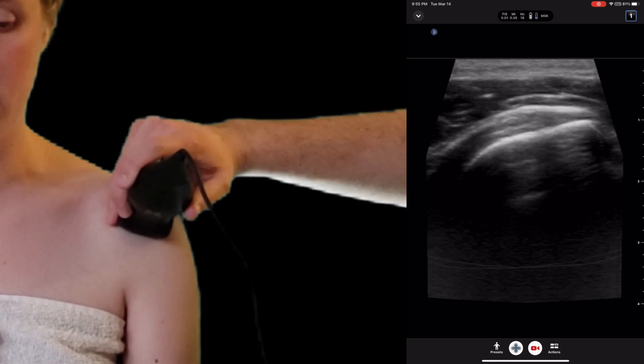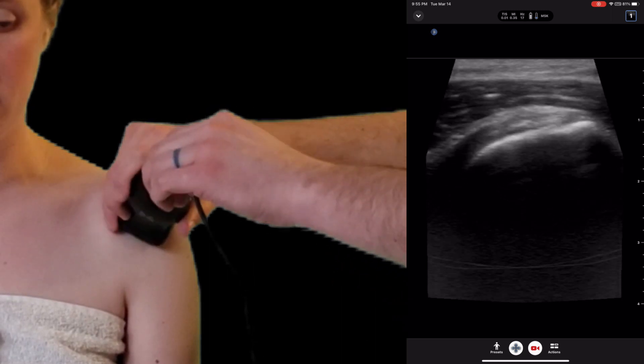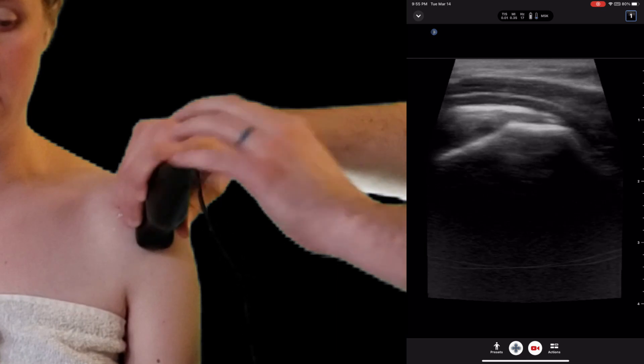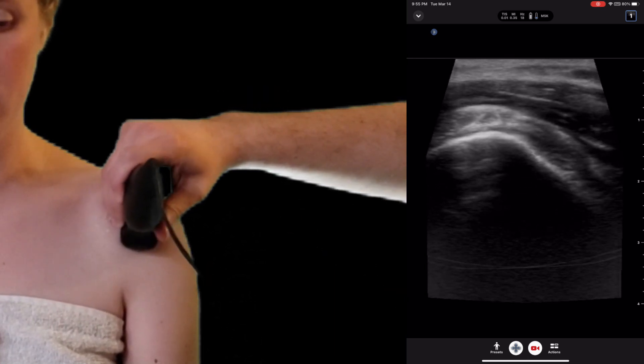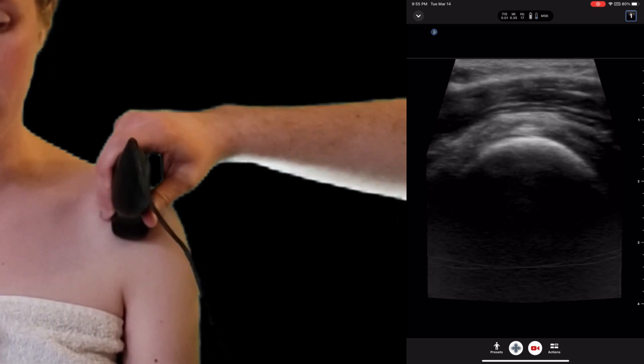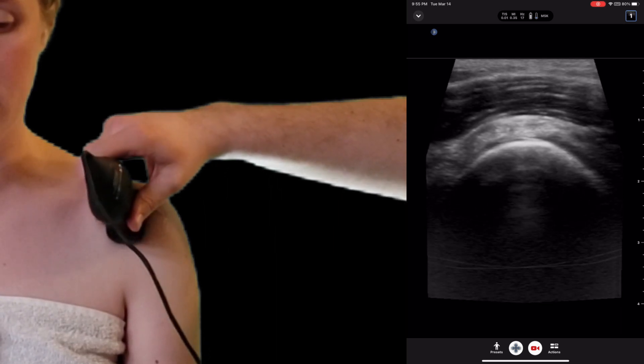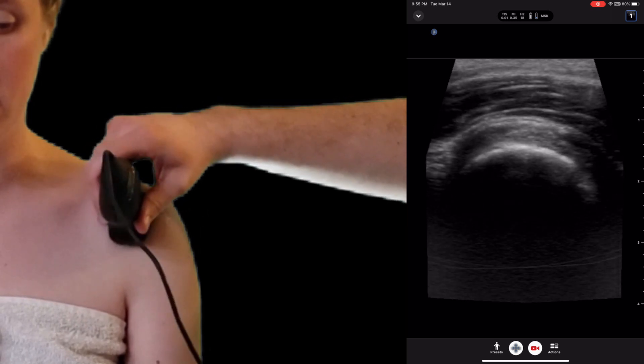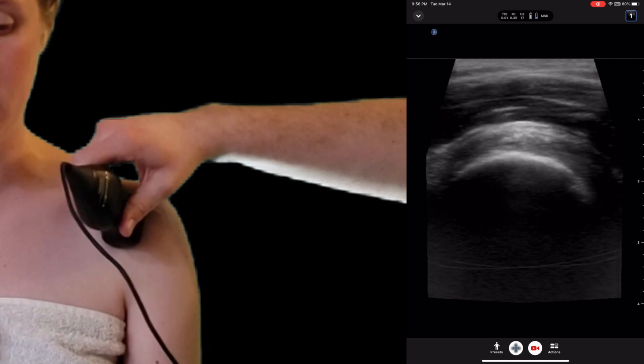Once you've evaluated it in long axis, you'll rotate your probe 90 degrees and evaluate the tendon in short axis, again looking for any large defects or tears in the tendon. Make sure to continue to wag the probe, because anisotropy can mistakenly look like a torn tendon.